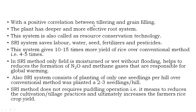A positive correlation between tillering and grain filling is found in the SRI method. Plants have different and more effective root systems. SRI is called resource conservation technology because it saves labor, water, seed, fertilizers, and pesticides. This system gives 10 to 15 times more yield of rice over the conventional method, which yields only 4 to 5 tons per hectare.